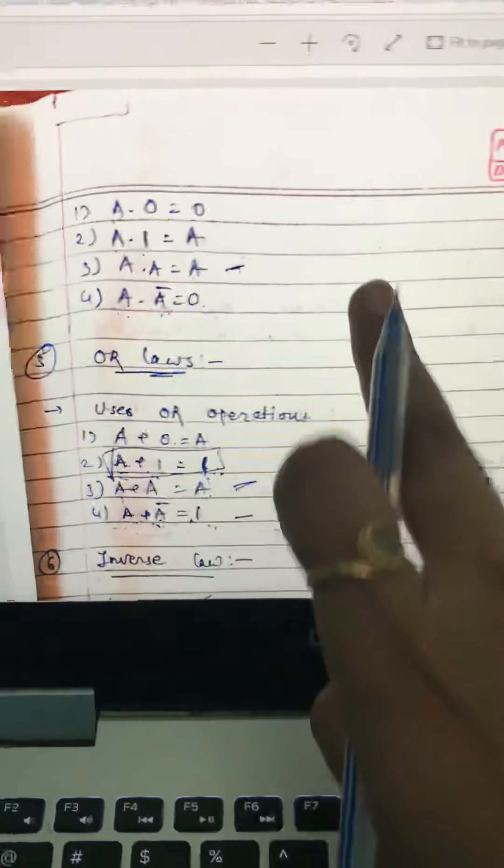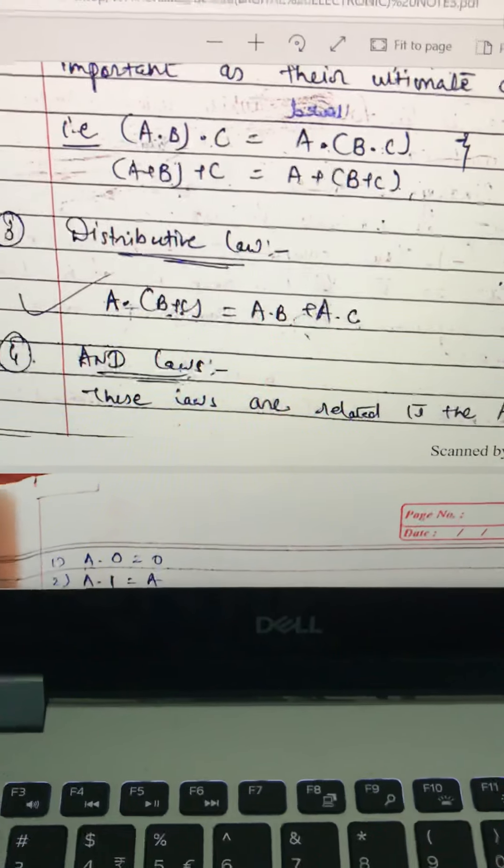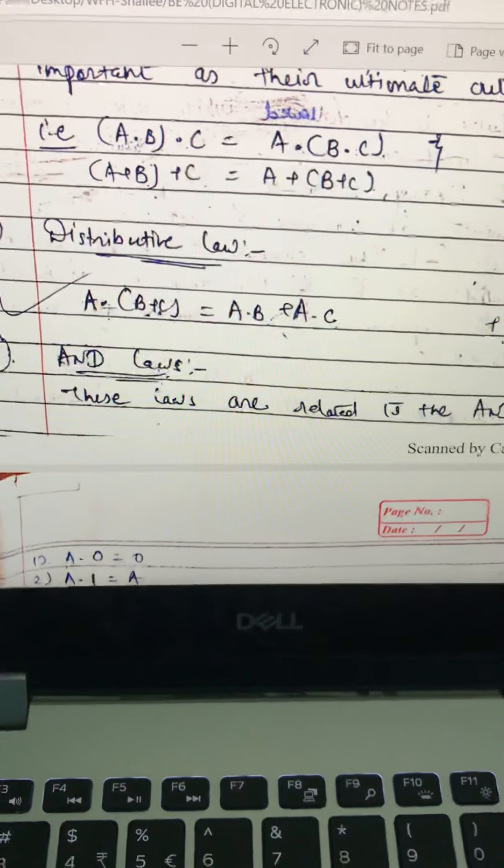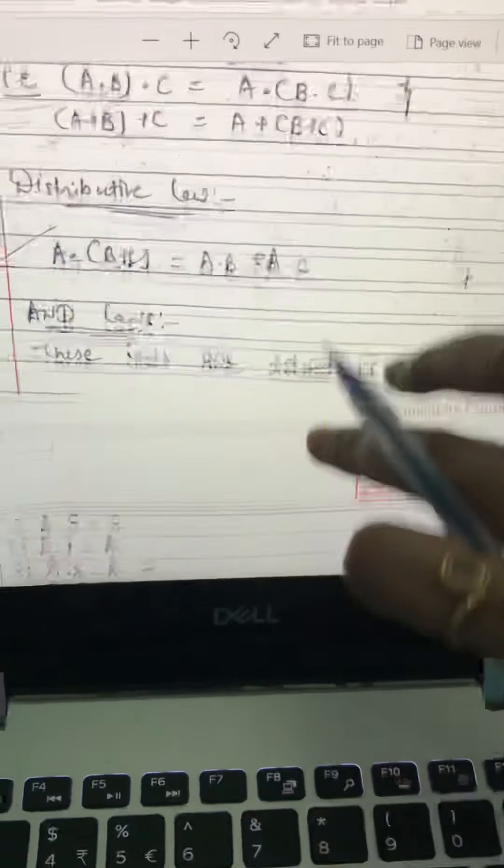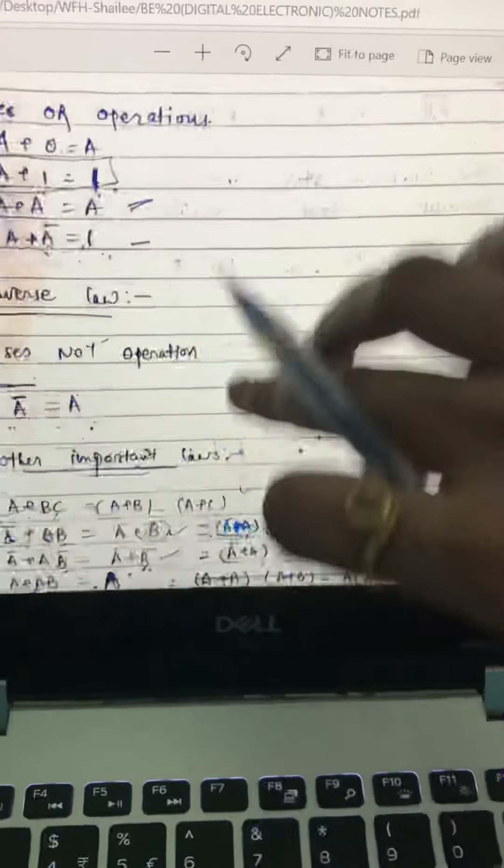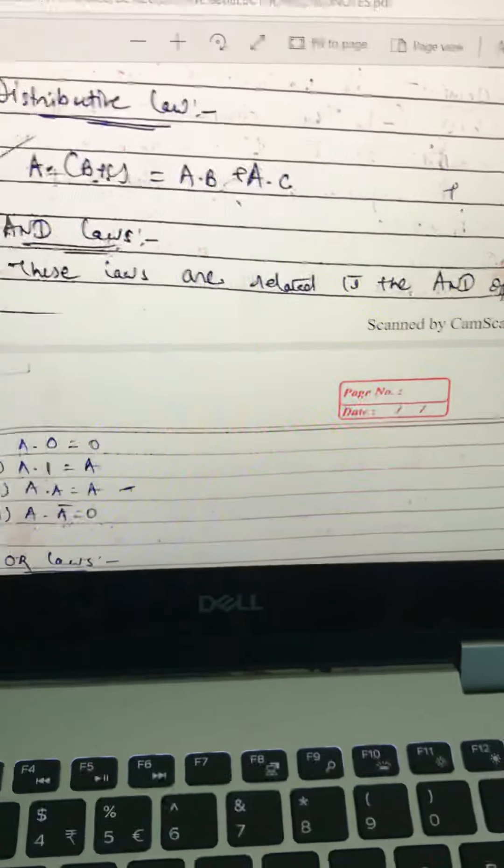In yesterday's lecture we understood the three different types of basic laws of Boolean algebra. In today's lecture, let's start with the AND or inverse law and some other important laws too.